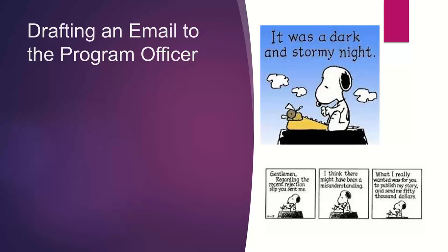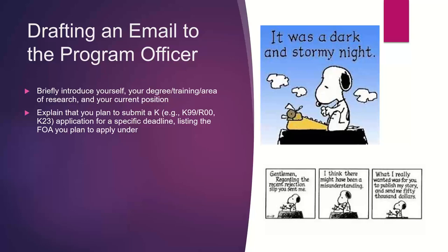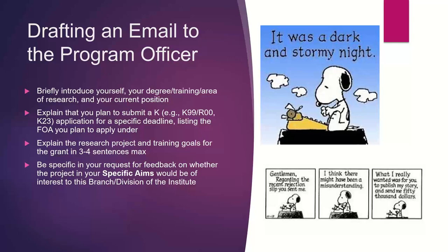So you have your specific aims draft and biosketch. Send those to your primary mentor, and then when you get feedback and edit them, draft an email to the program officer. Briefly introduce yourself and your degree, training area of research, and current position. Explain that you plan to submit a K — say which mechanism and what specific deadline you're applying for, whether October, February, or June — listing the FOA you plan to apply under. Explain your research project and training goals in three to four sentences max, and be specific in your request for feedback on whether the project and your specific aims would be of interest to this branch, division, or program of the institute. Attach your aims and biosketch and wait for feedback.